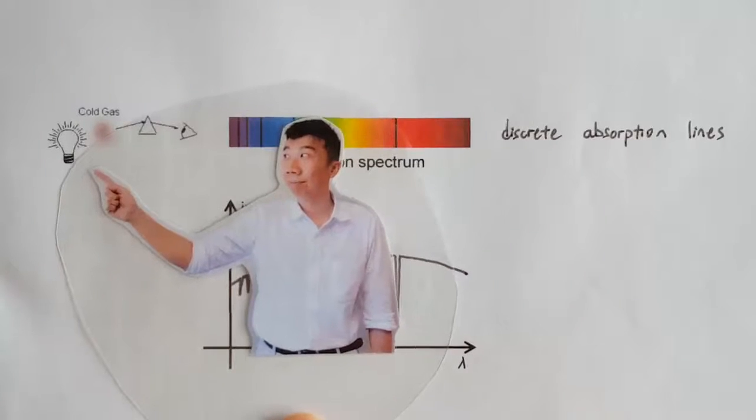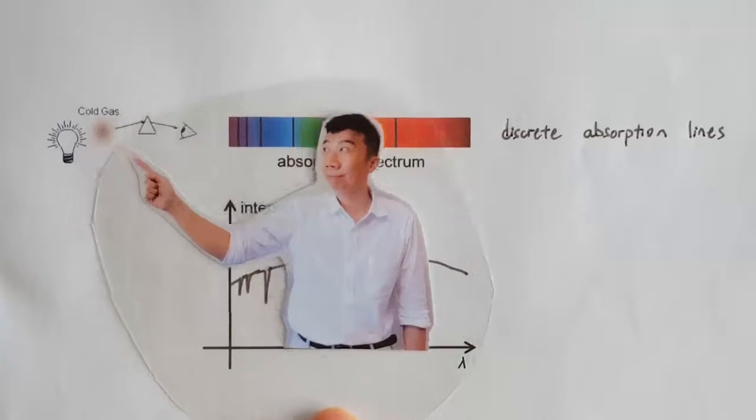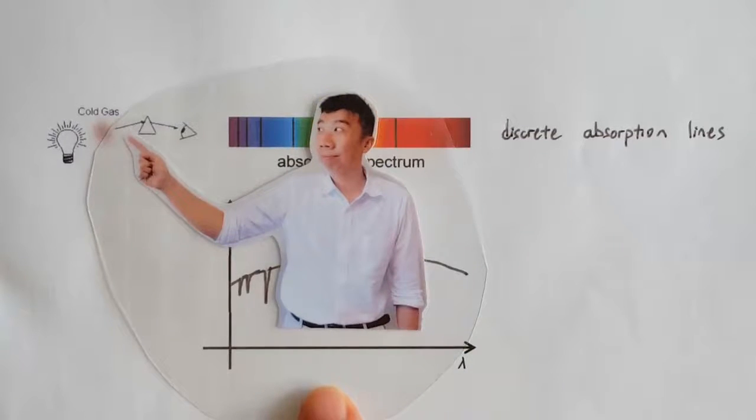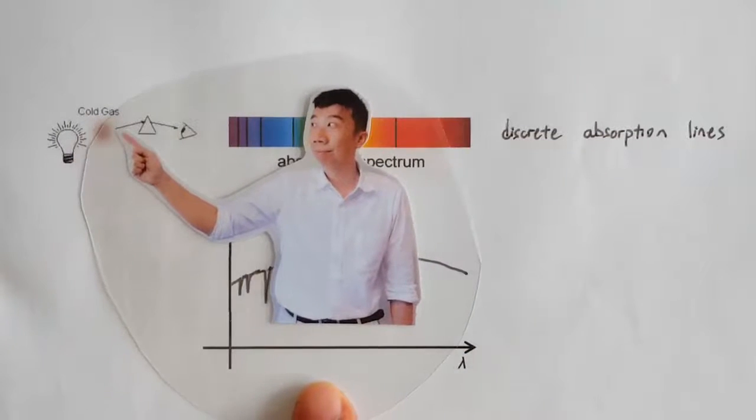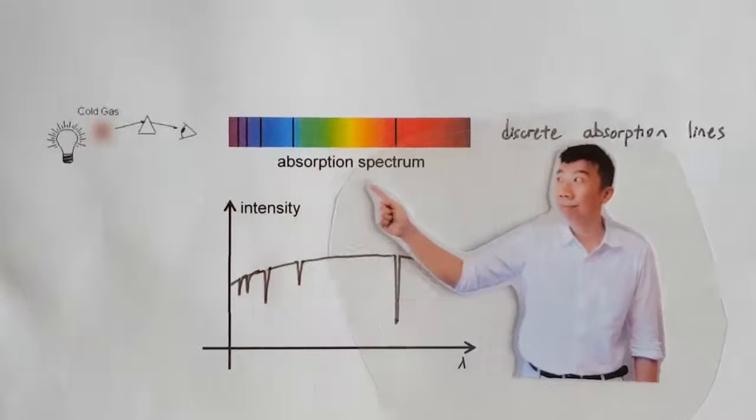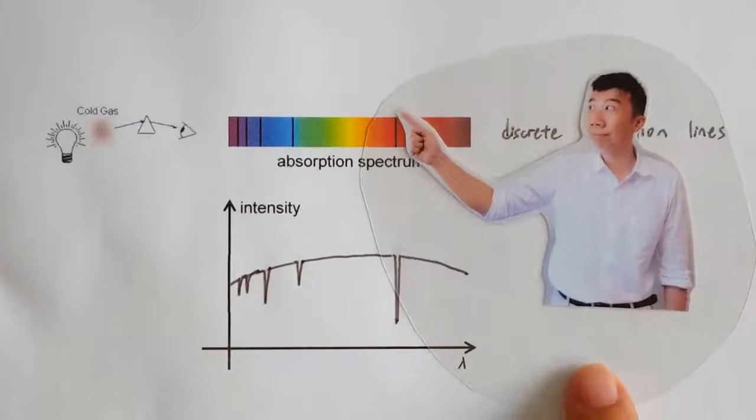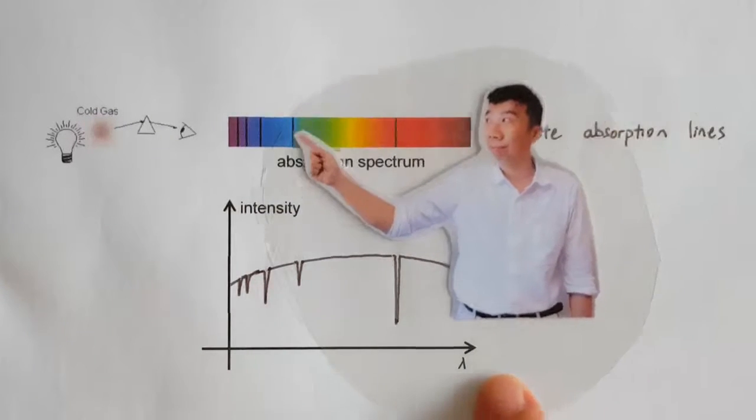You can pass a beam of light that has a continuous spectrum through a cool gas. If you study the spectrum of the light that has been filtered by the cool gas, you will see what is called the absorption spectrum. It's basically a continuous spectrum, punctured by dark absorption lines.